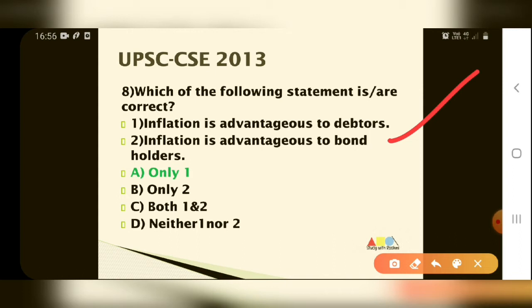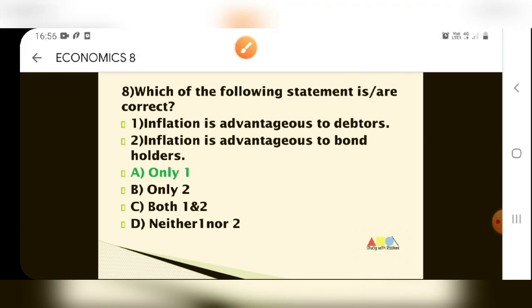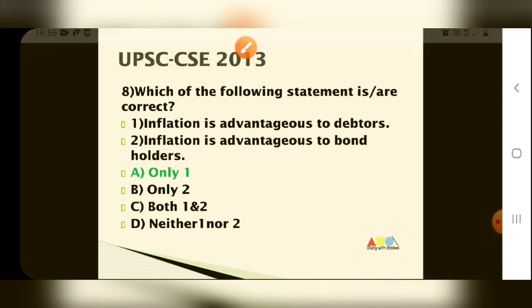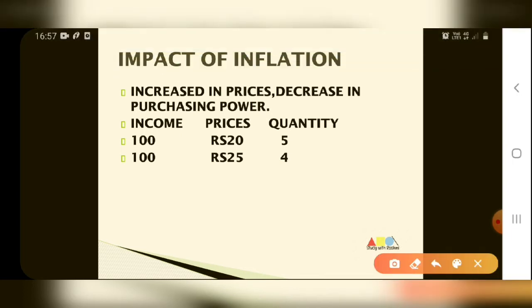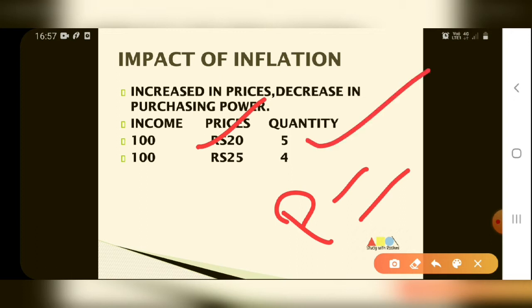Let me explain with an example. Suppose your income is 100 and you buy something for 20 rupees — so you could buy 5 units. Now what happened? Inflation has increased, so the price becomes 25 rupees and income is still 100 — now you can only buy 4 units.